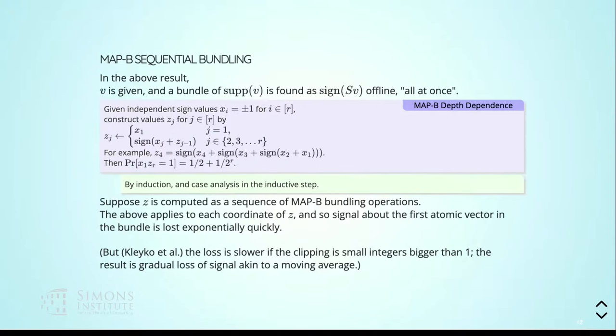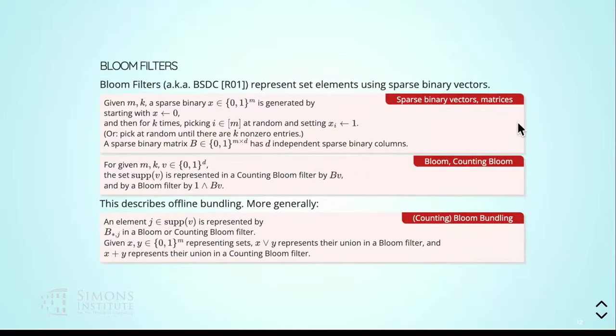What they also noticed: if you clip not down to one but to small integers — something intermediate between MAP-I and MAP-B — the decay continues but occurs much less rapidly. You get a kind of moving average done in a nonlinear way, which is an interesting construction.